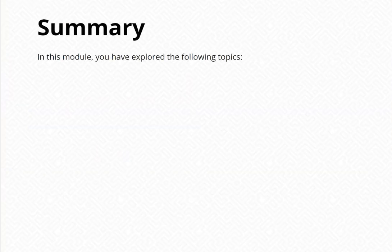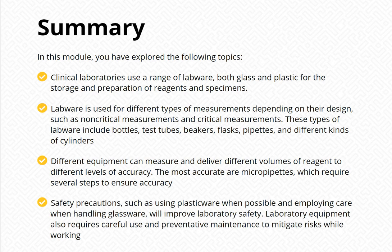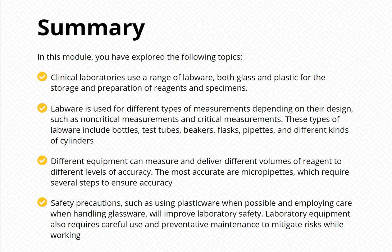In this module, you have explored the following topics. Clinical laboratories use a range of labware — both glass and plastic — for the storage and preparation of reagents and specimens. Labware is used for different types of measurements depending on design, including non-critical and critical measurements. Types include bottles, test tubes, beakers, flasks, pipettes, and different kinds of cylinders. The most accurate are micropipettes, which require several steps to ensure accuracy. Safety precautions such as using plasticware when possible and employing care when handling glassware will improve laboratory safety. Laboratory equipment also requires careful use and preventative maintenance to mitigate risks.